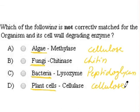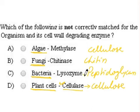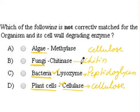Coming to the enzymes given: cellulase will degrade cellulose, so that is a correct match. Lysozyme is a bactericidal enzyme that degrades the bacterial cell wall, so that is also correct. And in fungus, chitinase would degrade the cell wall made up of chitin, so that is also correct.